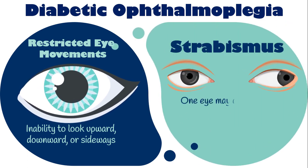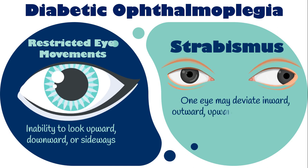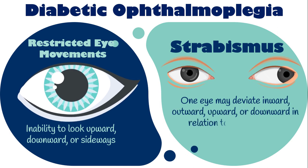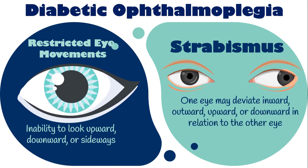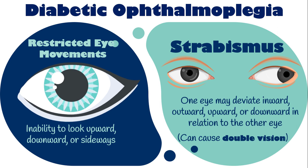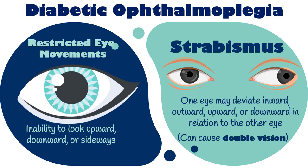One eye may deviate inward, outward, upward, or downward in relation to the other eye. Strabismus can cause double vision as well.